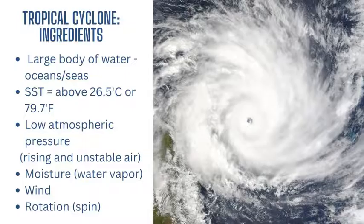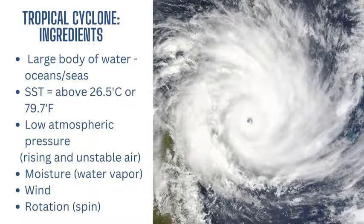The first ingredient is that formation must happen over a large body of water — generally an ocean or sea, occasionally a very large lake. Those oceans and seas must be over a certain temperature at the surface: over 26.5 degrees Celsius, which equates to about 79.7 degrees Fahrenheit. This temperature is required to produce the amount of water vapor and moisture needed to form these large rotating rain bands and thunderstorm clouds. You also need low atmospheric pressure — unstable rising air, water vapor condensing at the dew point, and cumulus clouds organizing into rain bands to build the cyclone.